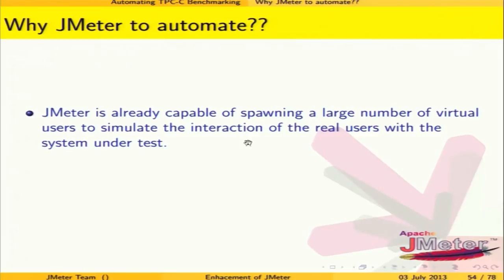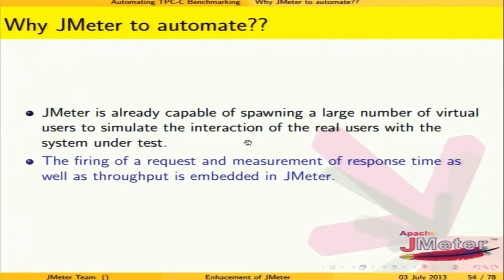Why did we choose JMeter to automate TPCC? JMeter is already capable of simulating a large number of users to emulate real users interacting with the system under test. Transaction response time and throughput are already calculated in JMeter. Since a significant part of the TPCC process is already in JMeter, we decided to include the remaining parts to make a complete preliminary TPCC test.